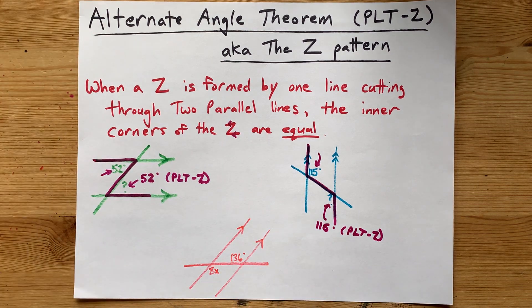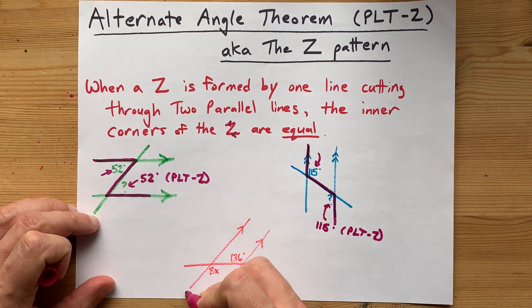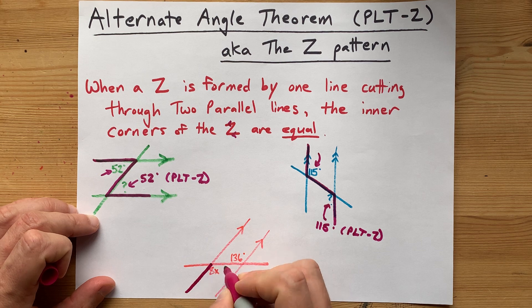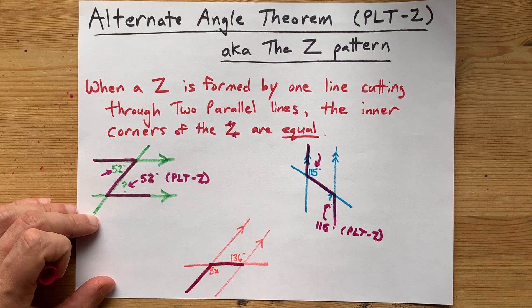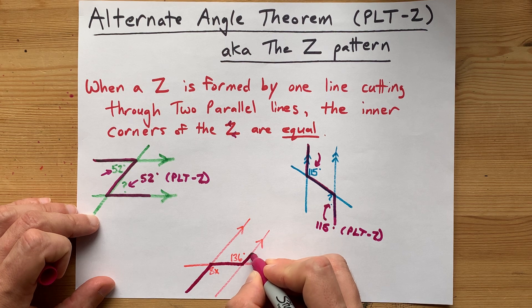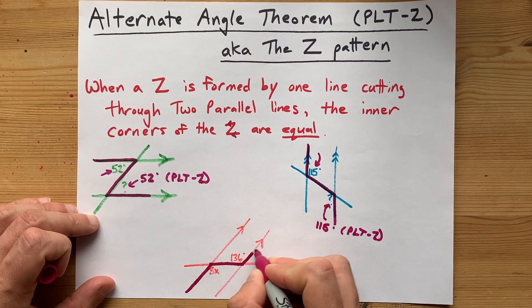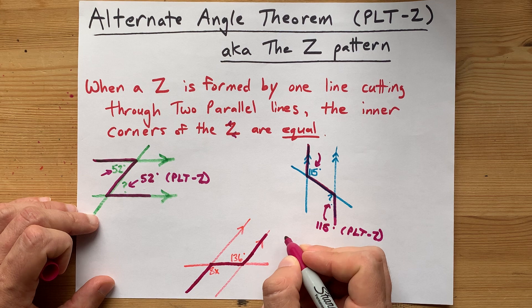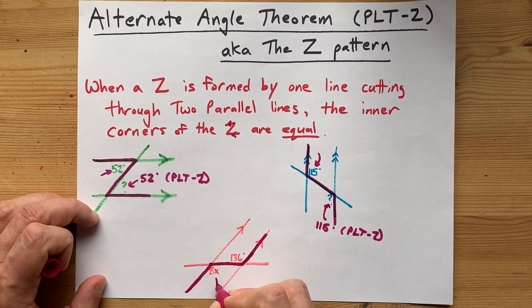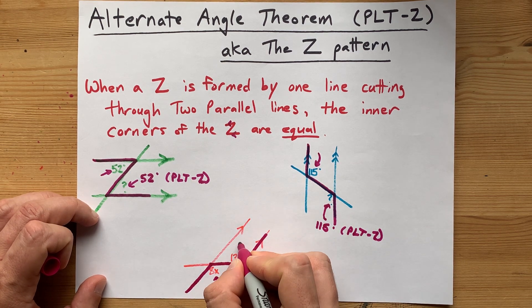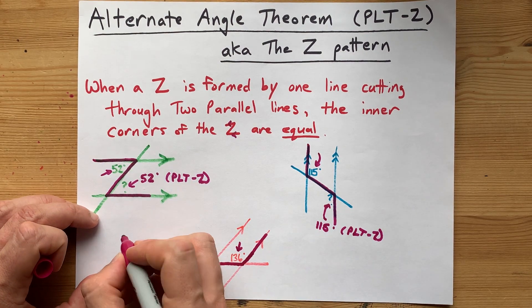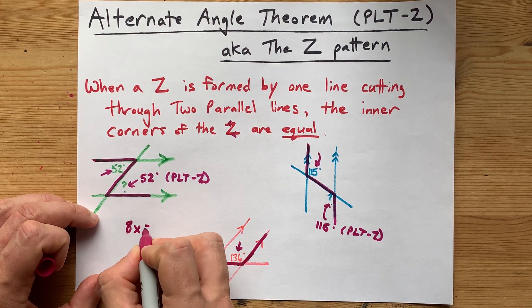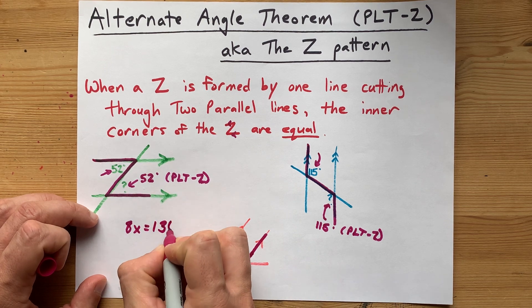Let's do it one more time. If I start here and go across the parallel line through the transverse, or through the intersecting line, and then continue in the same original direction on the other parallel line, I get that this inner corner of the Z has to be equal to this inner corner of the Z. That means 8X equals 136.